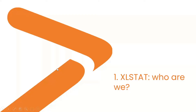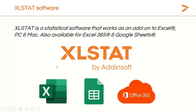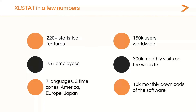First, let me tell you a little bit about XLSTAT. XLSTAT is a statistical software that works as an add-on to Excel on PC and on Mac. It's also available for Excel 365 and Google Sheets, so you can use it on the cloud. XLSTAT holds more than 220 statistical features, more than 150,000 users worldwide, more than 25 employees at your service, 300,000 monthly visits on the website, and the software is available in seven languages and has offices in three different time zones: America, Europe, and Japan. The software is downloaded 10,000 times every month.